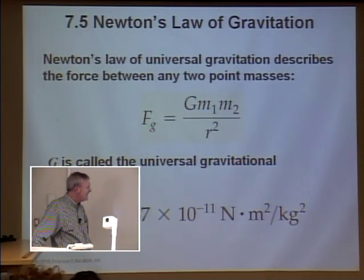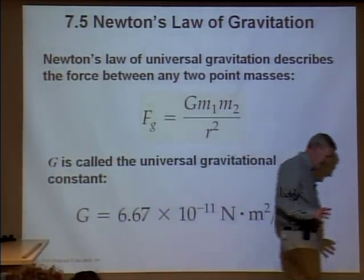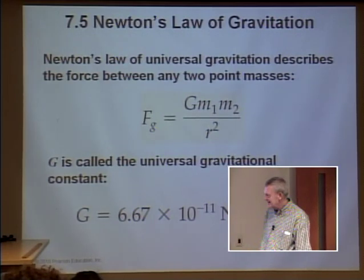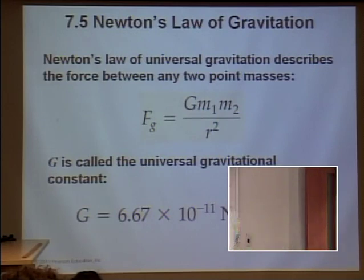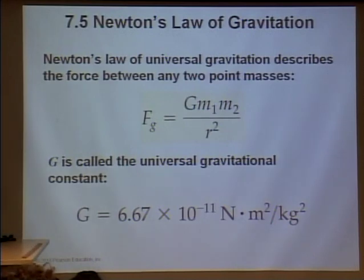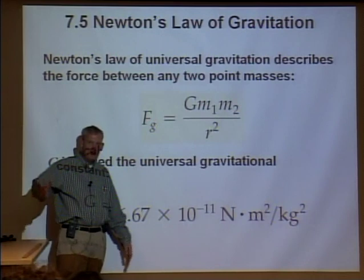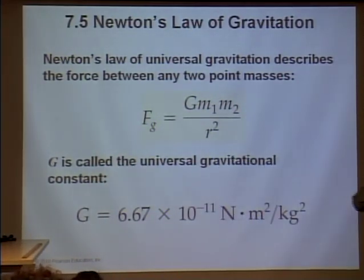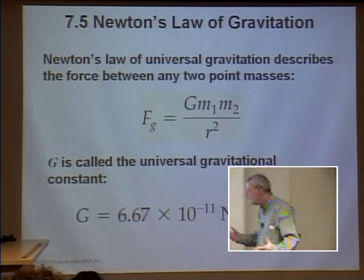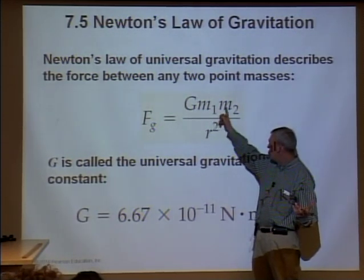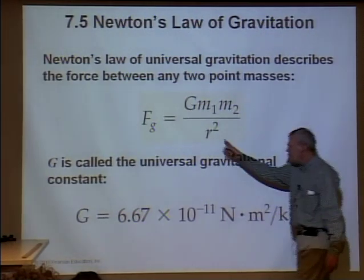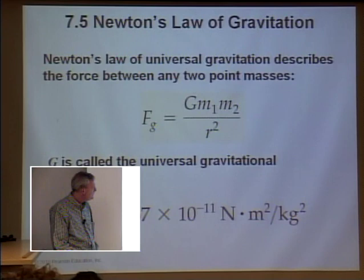Now, Newton's law of gravitation. This was on our test. Newton noticed that two masses attract each other with a force directly proportional to the product of their masses — m1 times m2 — and inversely proportional to the square of the distance between their centers of mass. We still don't know why there's an attractive force between two masses — we just know it works by experiment.